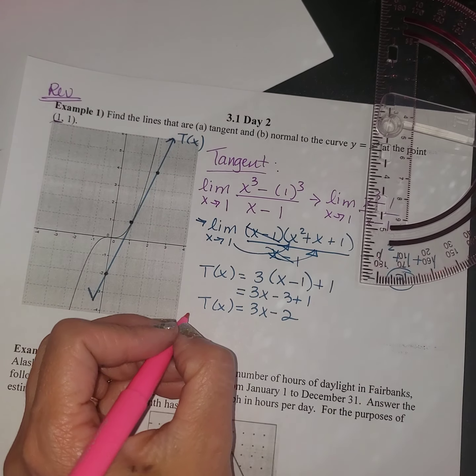So the y-intercept is 1 and 1 third, so about right there. And our slope is negative 1 third, so we're going to go down to the next 1 third mark, and over 1, 2, 3. And let's go backwards, up 1 to the next 1 third mark, and left 1, 2, 3. And then we'll connect the dots and have our normal line.